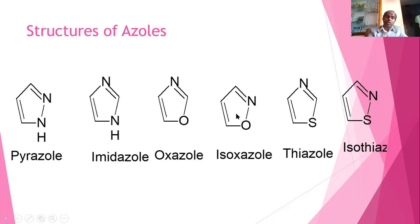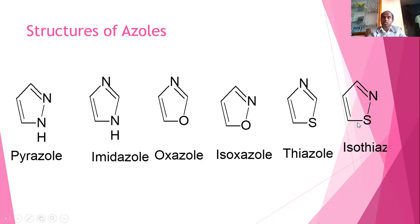Similarly, oxazole and isoxazole: in oxazole, oxygen is at the first position and nitrogen at the third position; in isoxazole, oxygen is at the first and nitrogen at the second position. In thiazole, nitrogen is at the third position; in isothiazole, nitrogen is at the second position. I will discuss the synthesis of all these azoles in the next slides.